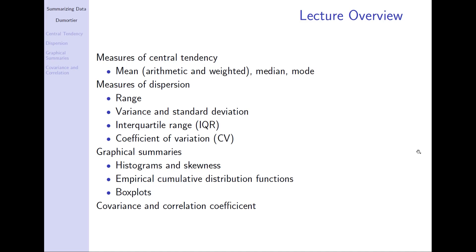We are going to talk about the mean — this could be the arithmetic mean or also the weighted mean — and also median or mode. Then we are going to move on to measures of dispersion. Think about measures of dispersion as a measure of how far the data is spread around the mean. There we are going to look at range, variance and standard deviation, but we are also going to learn about the interquartile range, or IQR, and the coefficient of variation.